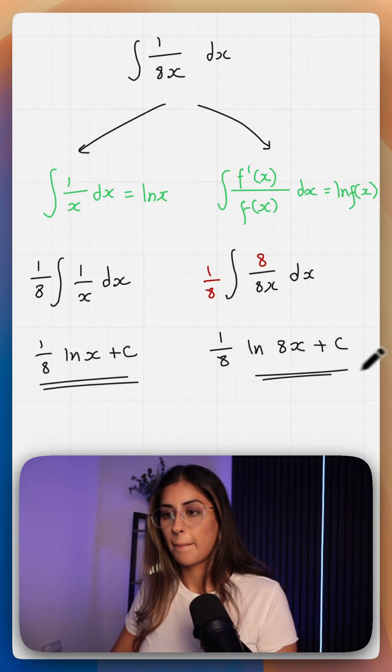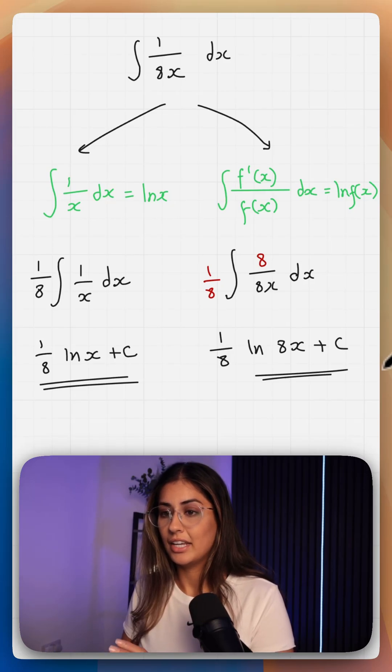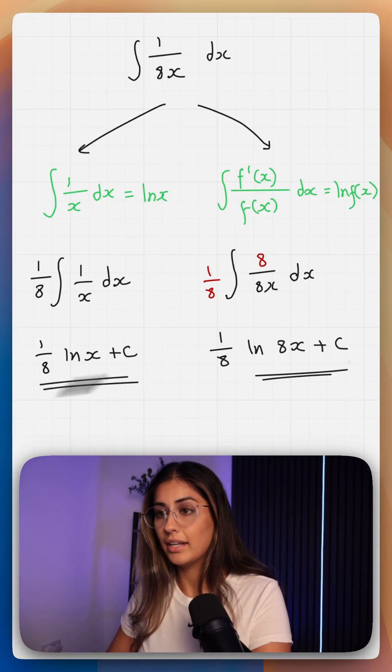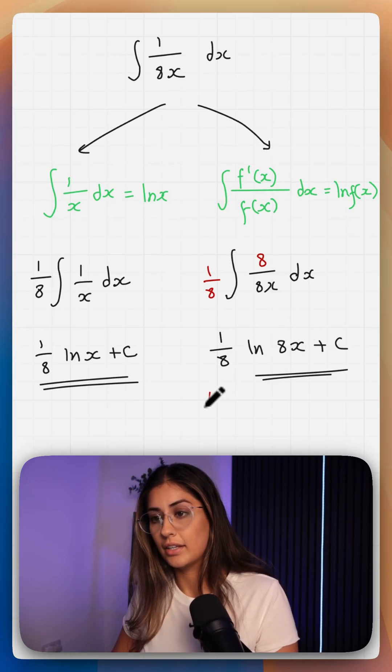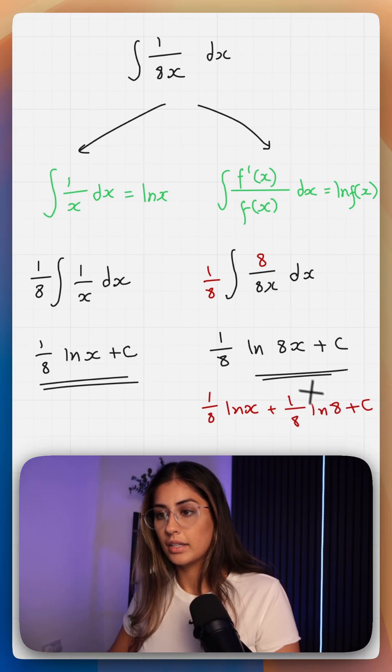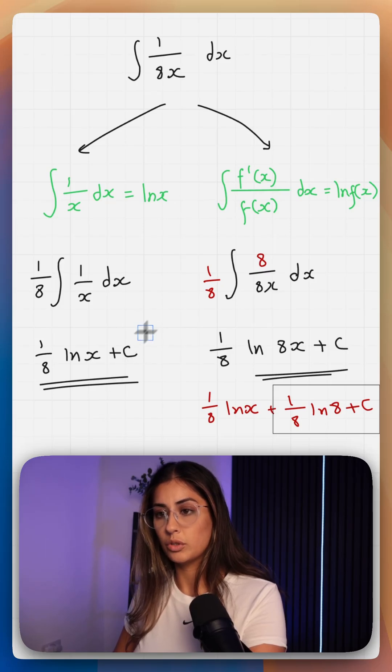But these two are different, and which one is the correct answer? Well they're actually both correct, it's just one of them your constant will be slightly different. We can actually write 1 over 8 ln of 8x as 1 over 8 ln of x plus 1 over 8 ln of 8 plus c. In this case your constant is all of this which is equal to your constant here.